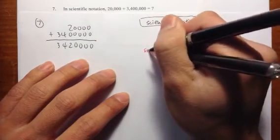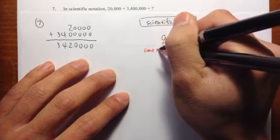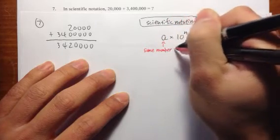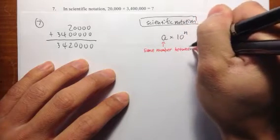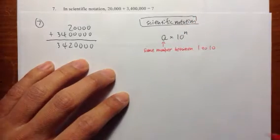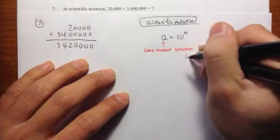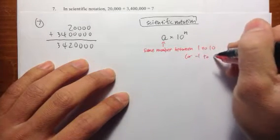And let me talk about what this a is. This number is just some number, but it has to be between 1 to 10, and sometimes it could be negative, or negative 1 to negative 10.